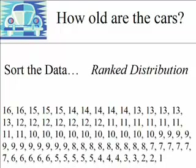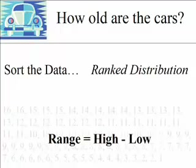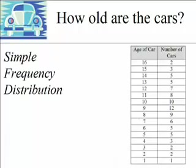One of the benefits to a ranked distribution is that you can calculate the range of the data. So if the oldest car is 16 and the newest car is one year, our range would be 16 minus 1, or a range of 15 years.